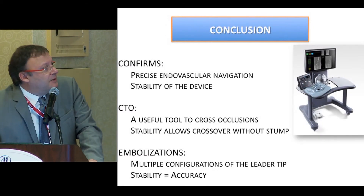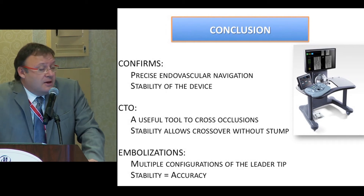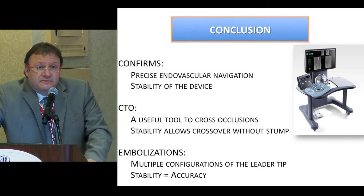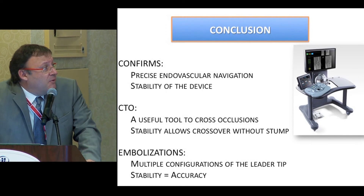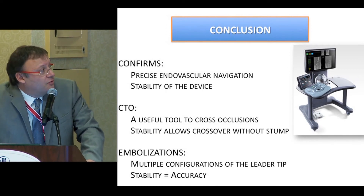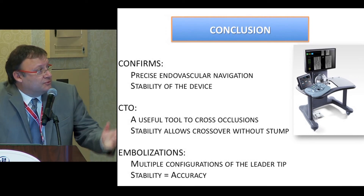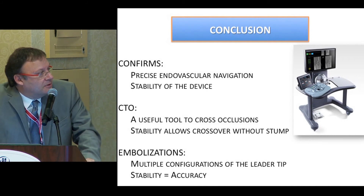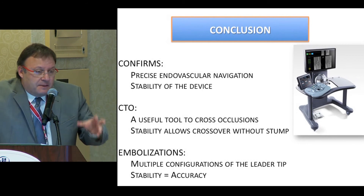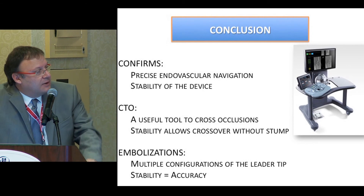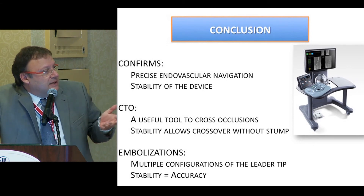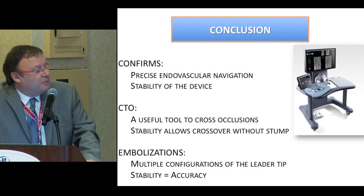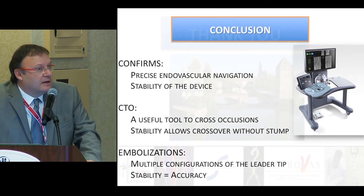Our preliminary experience confirms that the robot may help achieve precise endovascular navigation, and we have a high level of device stability during working. For CTOs, we use it as a useful tool to cross occlusions, and we find that the stability allows crossover without additional support — we are starting a series of patients in this specific indication. Concerning embolization, the capability to maneuver the wire within the aneurysm allows easier and varied embolization approaches — including distal embolization — and the stability enables plug deployment at the ostium of the artery. Thank you very much.